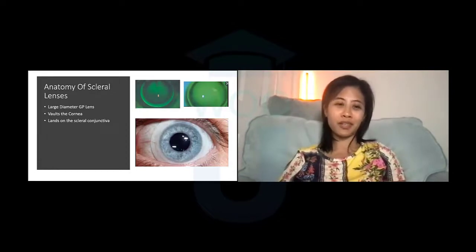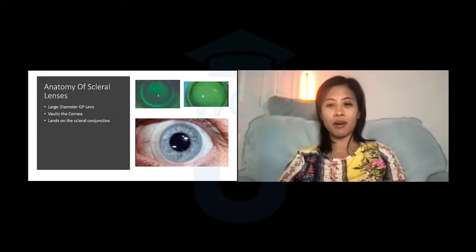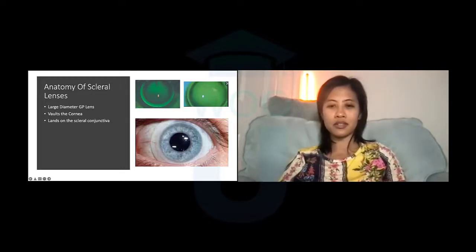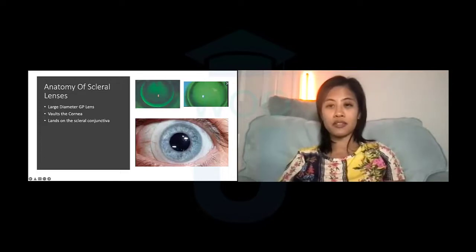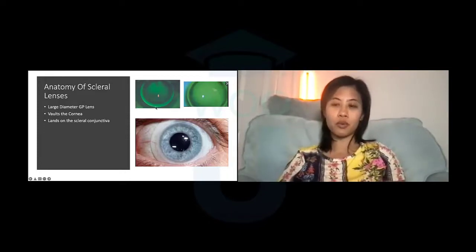First, I want to talk about the anatomy of a scleral lens. This is a large diameter, gas permeable lens that completely vaults over the cornea and rests on the white part of the eye, the scleroconjunctival shape. The picture at the very bottom is a picture of a well-centered scleral lens. This is to be differentiated from corneal lenses, which are the pictures on the top — a corneal lens which rests most of its weight on the middle of the cornea.